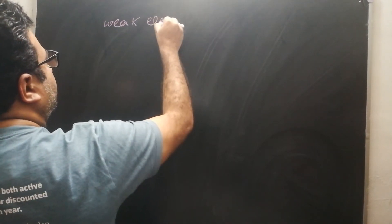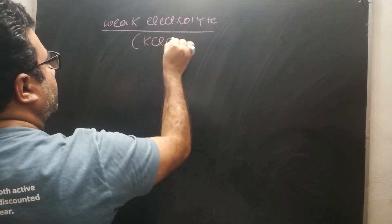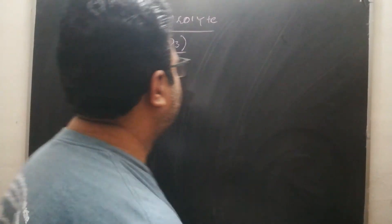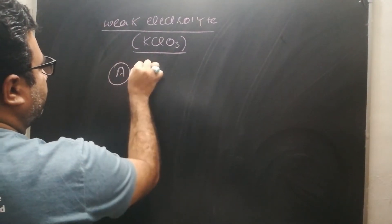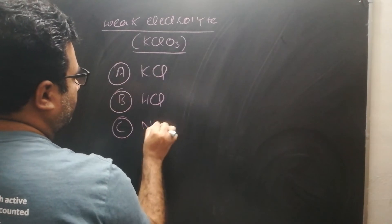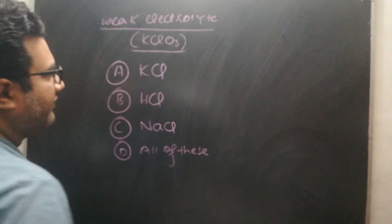We have a weak electrolyte — potassium chlorate (KClO₃). Which strong electrolyte can suppress its ionization through common ion effect? Your options are: KCl, HCl, NaCl, or all of these. Potassium chlorate is a weak electrolyte and we want to suppress its ionization. Which strong electrolyte can be used?